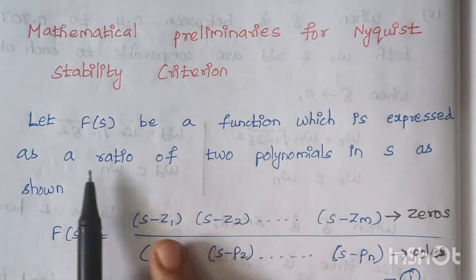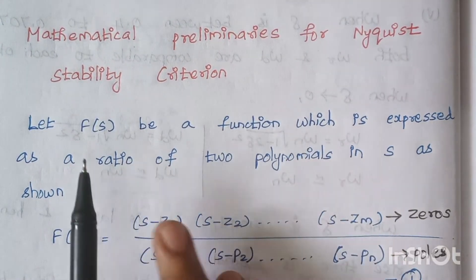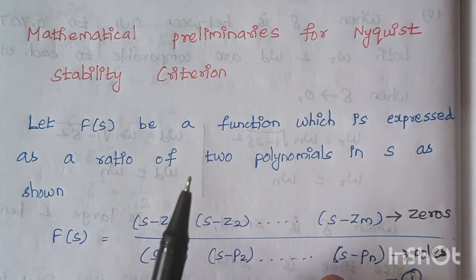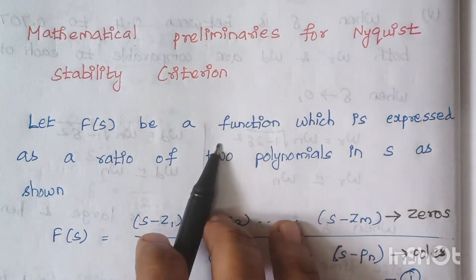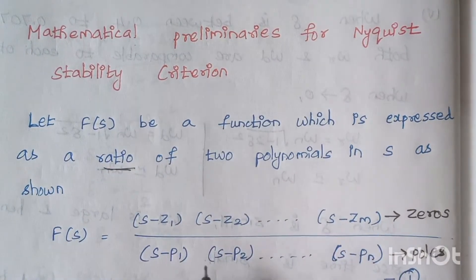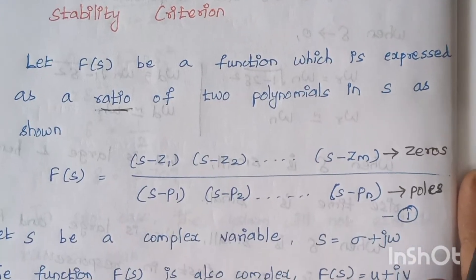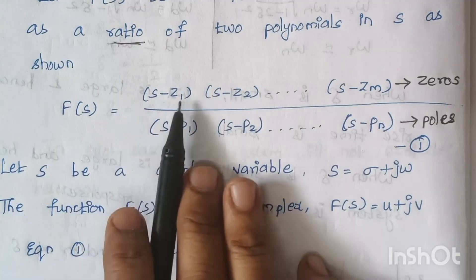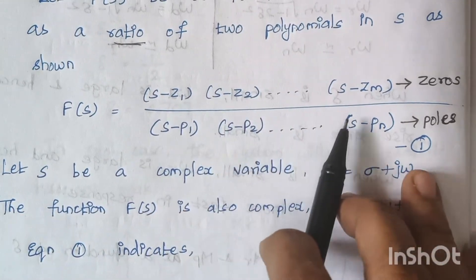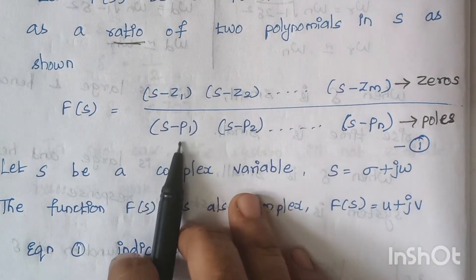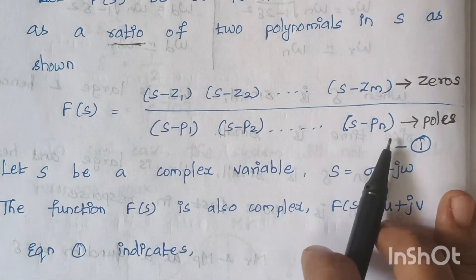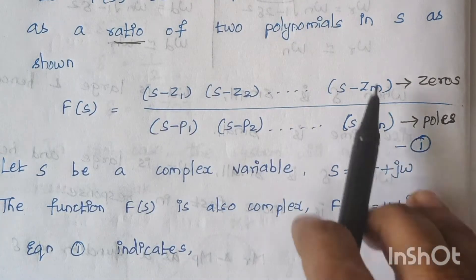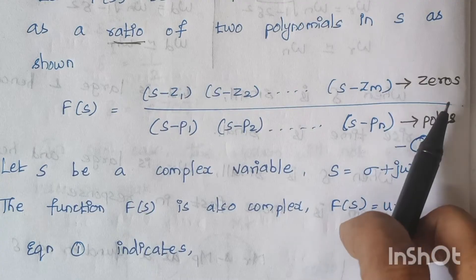So first let f of s be a function — a function which has a numerator as well as a denominator. f of s is a function as the ratio of two polynomials. So f of s is written as: f of s equals (s minus z1)(s minus z2)...(s minus zm) divided by (s minus p1)(s minus p2)...(s minus pn). The denominator terms represent poles and the numerator terms represent zeros.